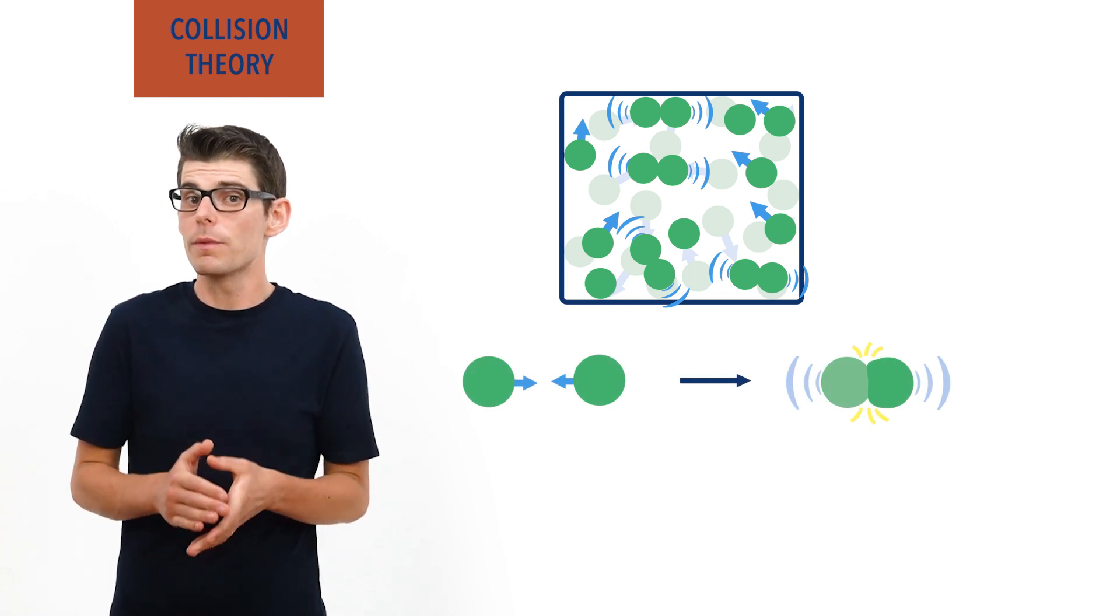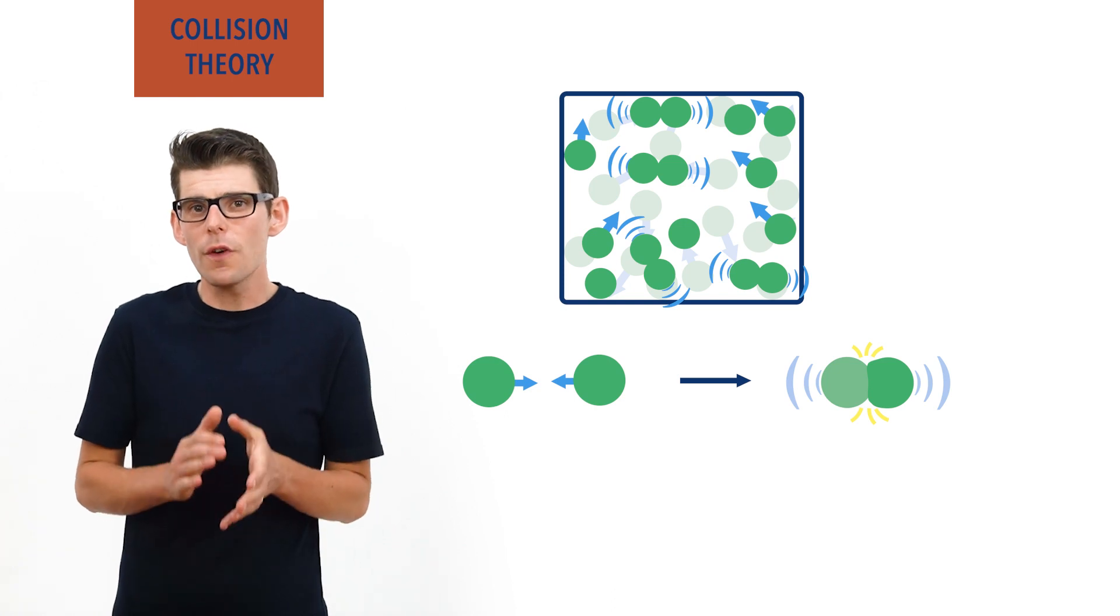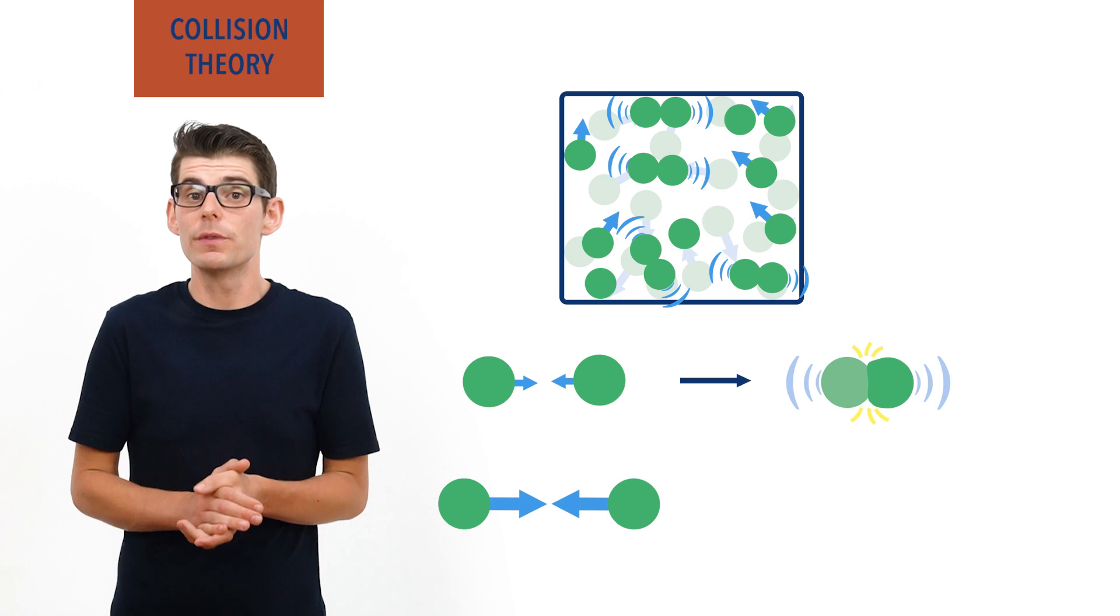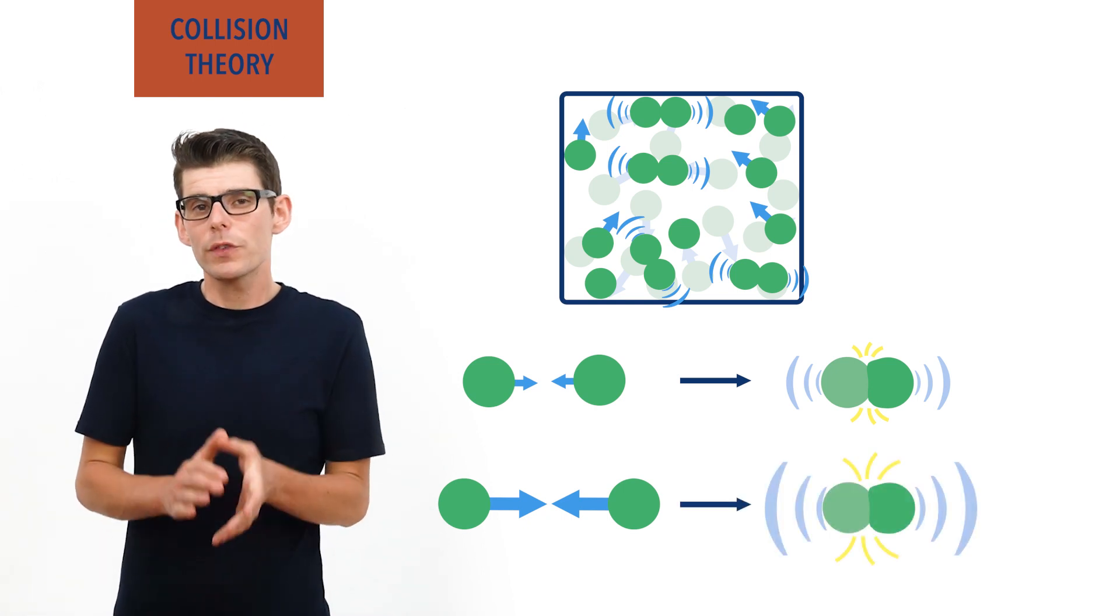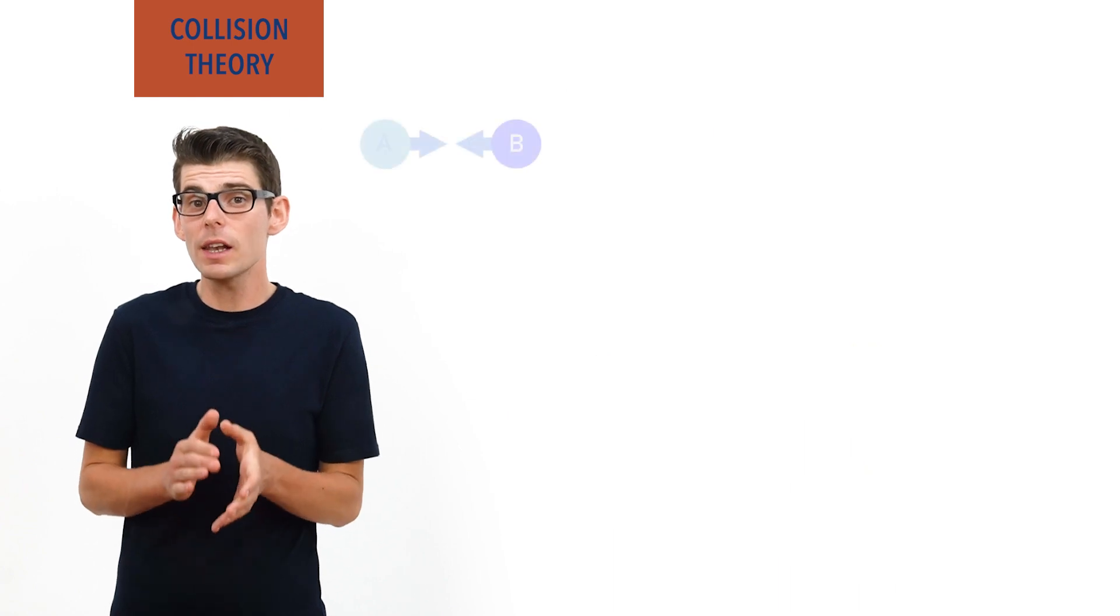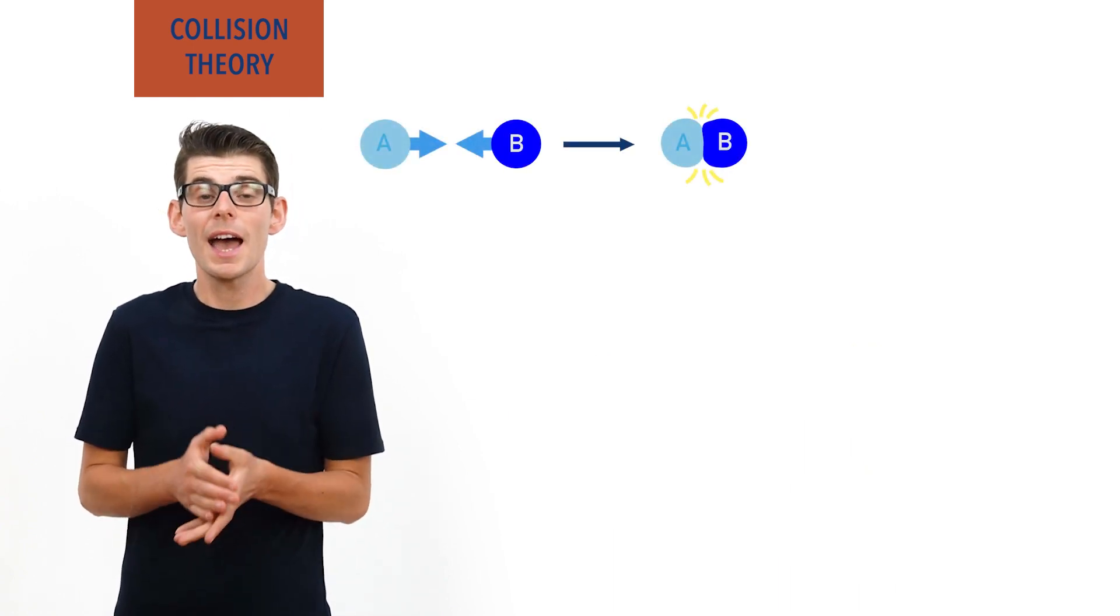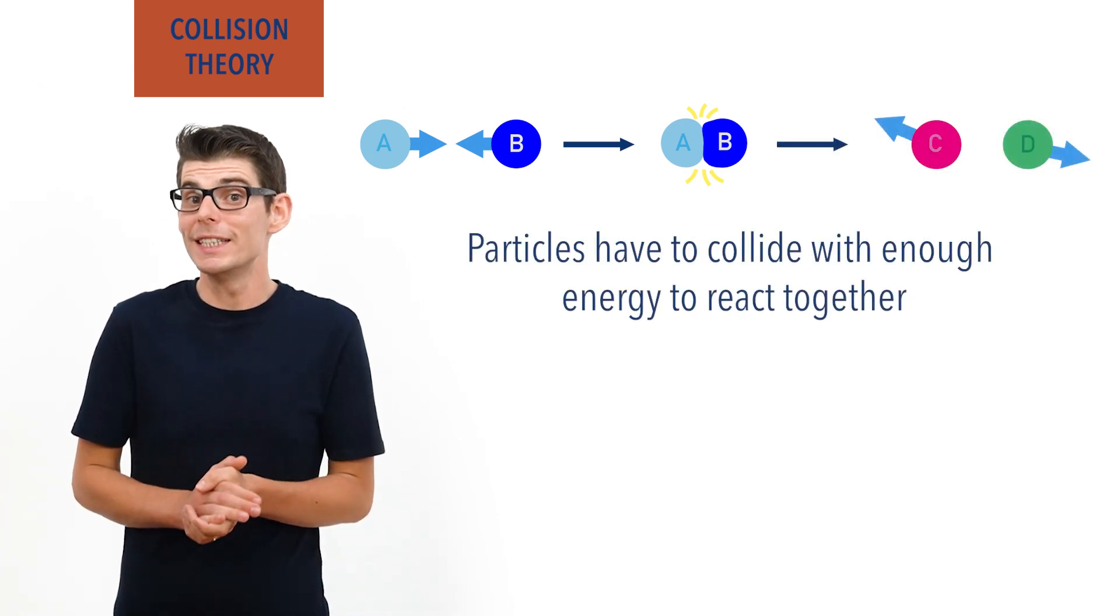This energy comes from the speed with which the particles are moving. The faster two particles are traveling when they collide, the more energy there is involved in the collision between them. For certain particles, if they collide together with enough energy, a chemical reaction can occur and new products can form.